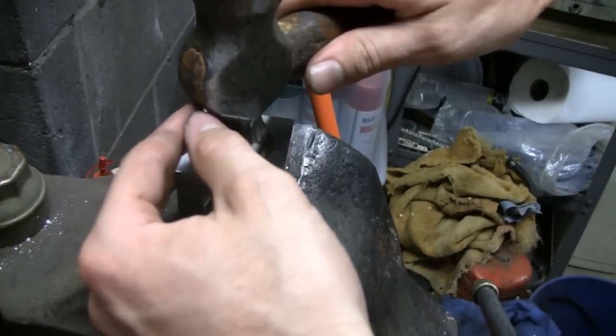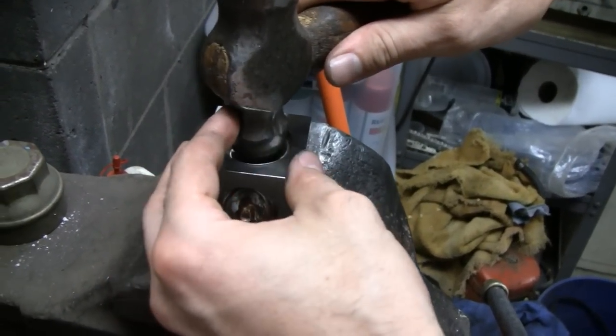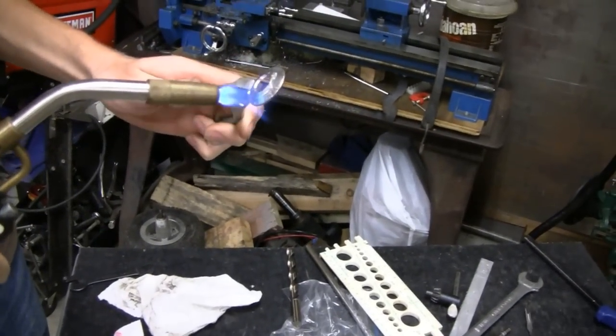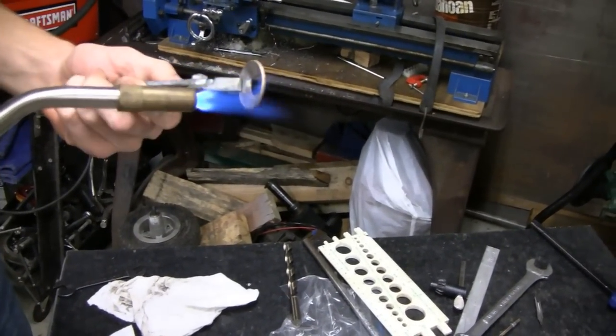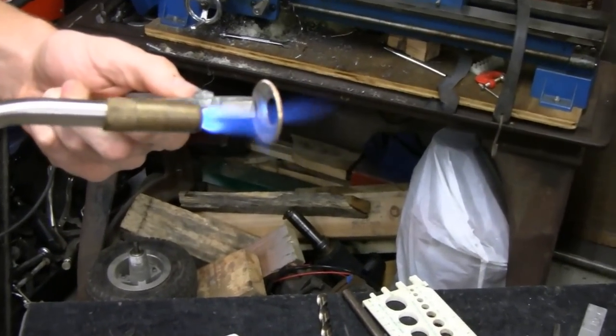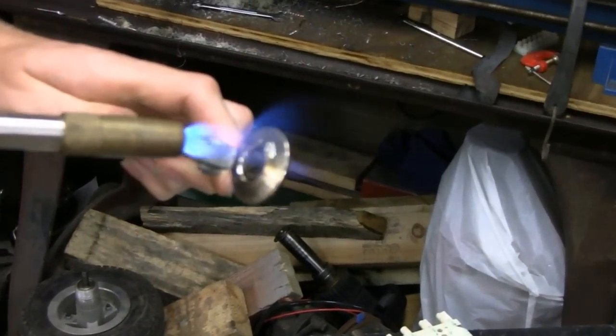Instead of wasting film here, we'll wait until he gets it on the mandrel. What he's doing now is annealing it, which is he's just going to bring it up, not cherry red, just slightly red. That'll just make it a little easier to make it bend.